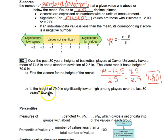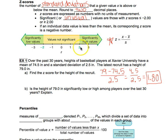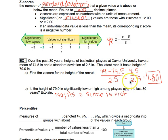The question asks: is the height of 79 inches significantly low or high among players over the last 30 years? This is a positive number, so we'd be looking at significantly high. In order to be significantly high, the z-score has to be 2 or above. Since 1.80 is not, we would say no — the z-score is not greater than or equal to 2, or less than or equal to negative 2. So that means it is not significant.